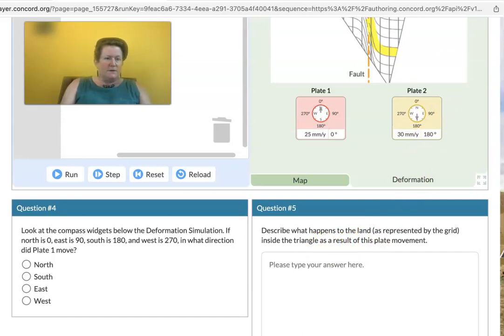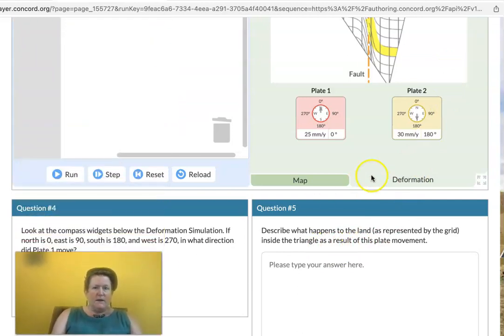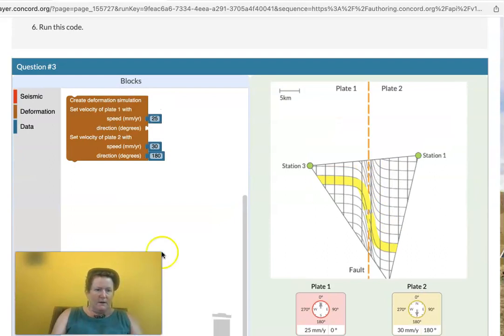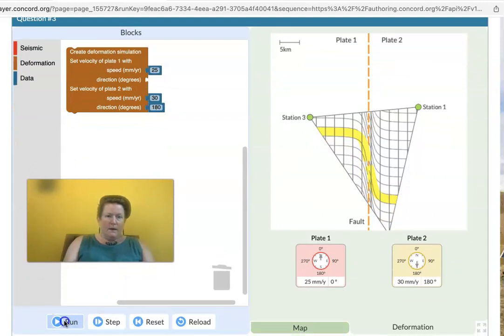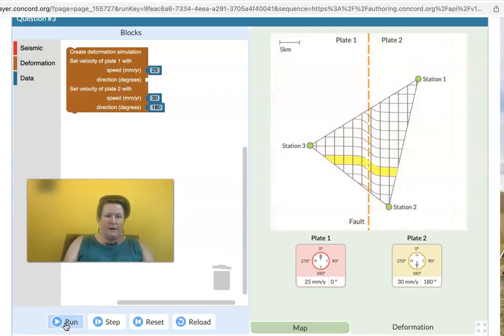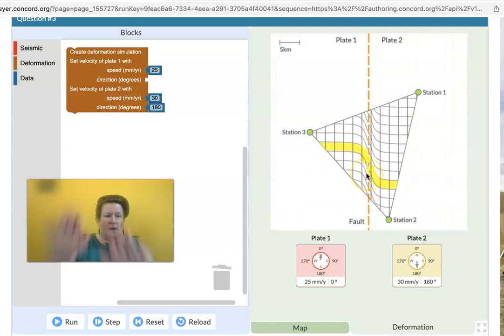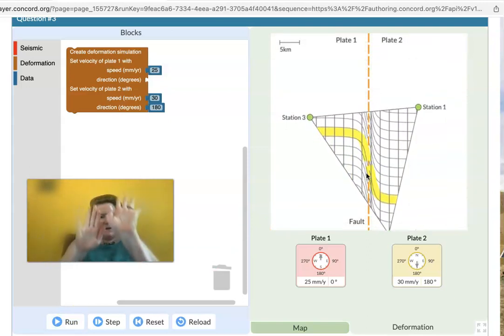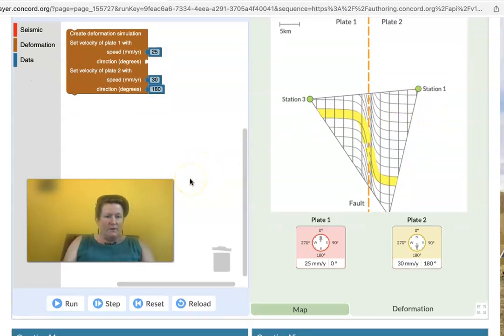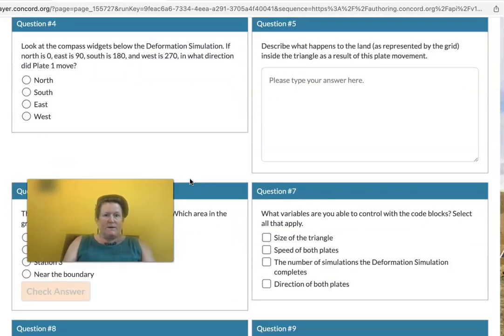Well, you can run the simulation again, which is really nice. You can go here, press run. And the whole thing will run again. And you can see how those two plates are moving. And the land is kind of being squished or transformed as they go in different, they go at different speeds.